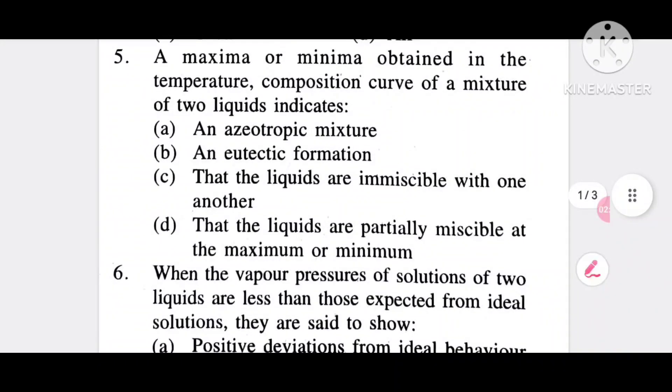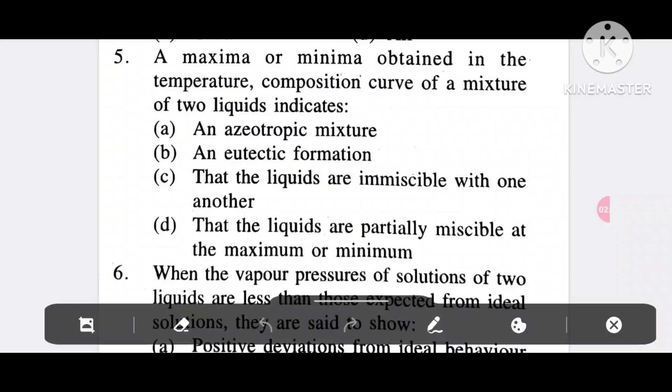Question 5: A maxima or minima obtained in the temperature composition curve of a mixture of two liquids indicates option A, an azeotropic mixture; option B, a eutectic formation; option C, that the liquids are immiscible with one another; option D, that the liquids are partially miscible at the maximum or minimum. It is option A, azeotropic mixture.